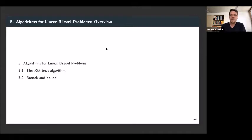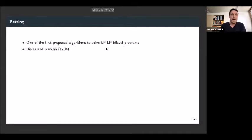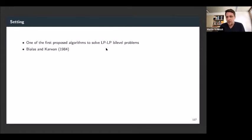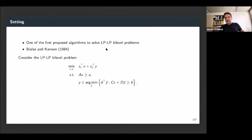So let's start. We have the setting here, which is more or less the setting proposed in the paper by Bialas and Karwan in 1984, which is the paper where they proposed what is today known as the cave-best algorithm. The setting is exactly the same as we considered in the geometric results section that we discussed at the end of the last lecture.